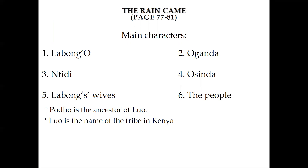Number five — Labung O has five wives because the first four could not bear him a daughter. That's why he gets a fifth one, and his last wife brought him one baby daughter. Number six, the people. The people are also main characters in the story.